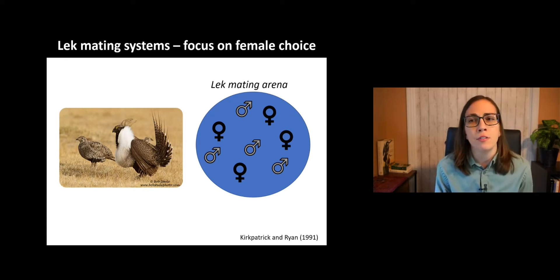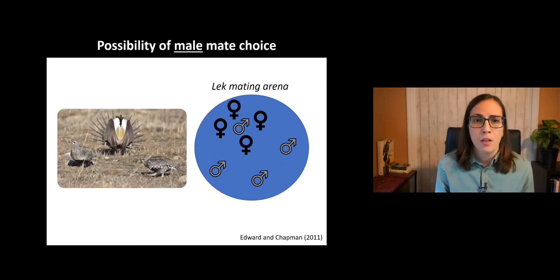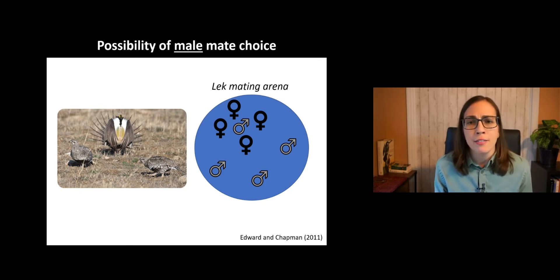Mate choice on leks is usually assumed to be driven by choosy females that search among and compare displaying males. And while this is certainly a well-supported explanation, it's perhaps not the complete picture. So when multiple females attend a male's display at the same time, male mate choice may also play a role. However, male mate choice in lekking species has not been studied as in-depth as female mate choice. Males are typically assumed to simply display indiscriminately towards all females.